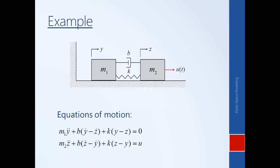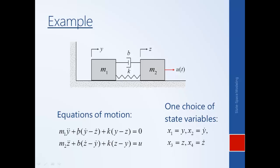One way to transform these equations into state space form is to do a blind substitution, as done previously. With two second order differential equations, we can transform them into four first order differential equations by a change of variables. It turns out, however, that this set of state variables is not minimum — we can put our system into state space form with a smaller number of state variables.